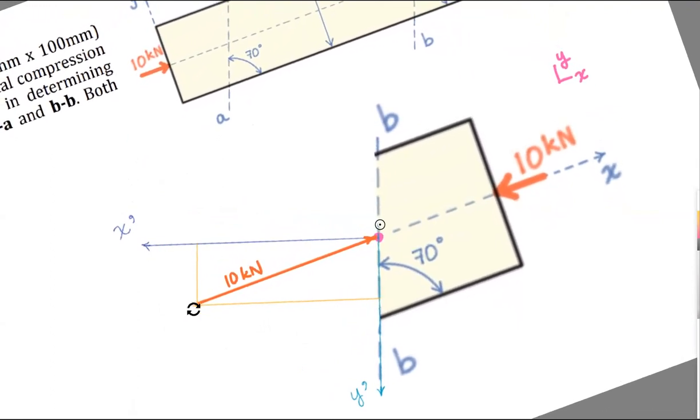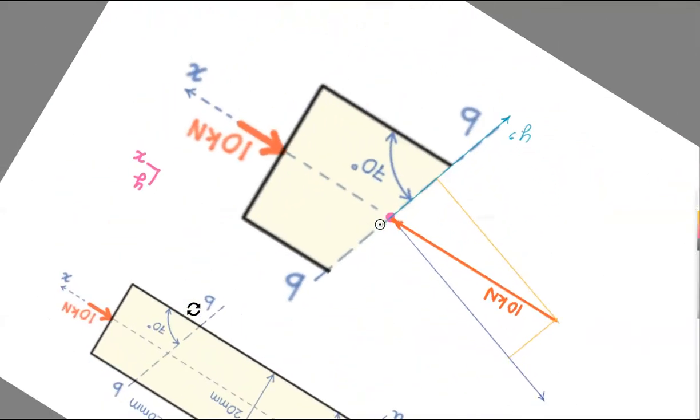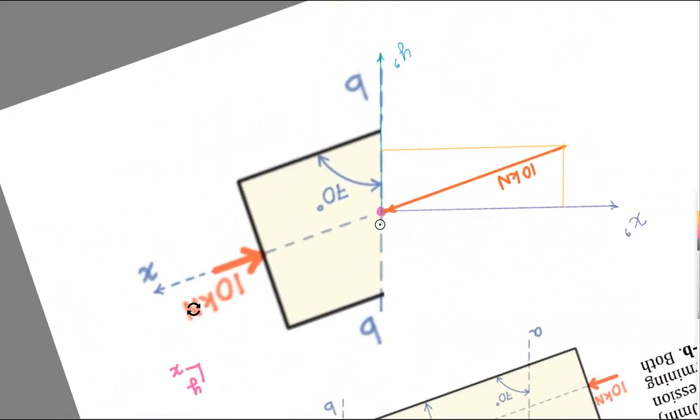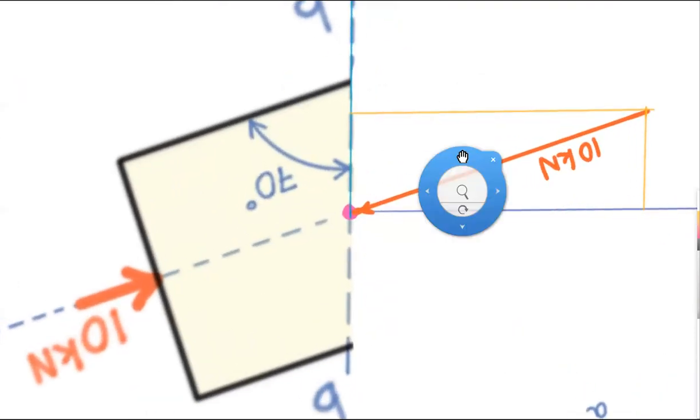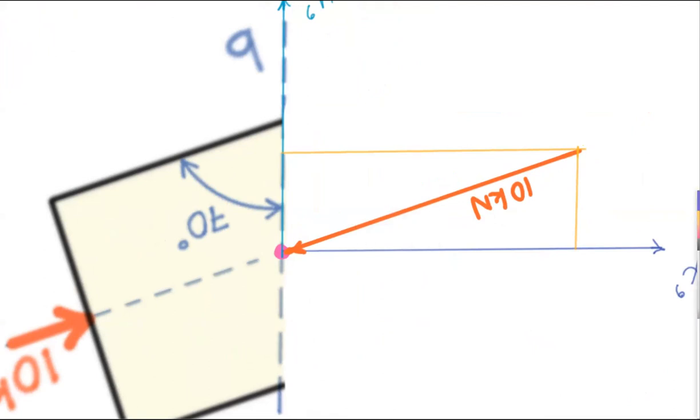Now I've got a bounding box in x prime, y prime, and I want to break the 10 kilonewton vector down into its components. Right now I'm going to turn my head or turn the paper until my worldview is no longer x, y, but x prime, y prime. And I could go all the way around if I wanted to. Just turn your head, turn your paper.